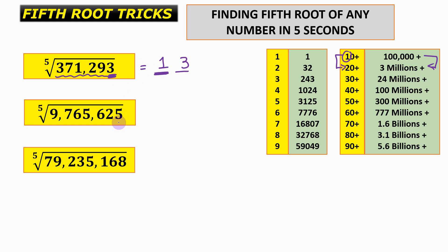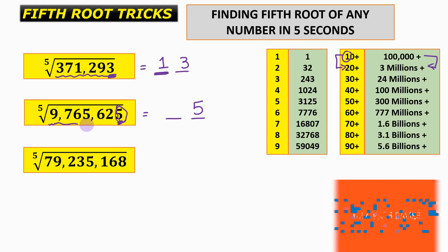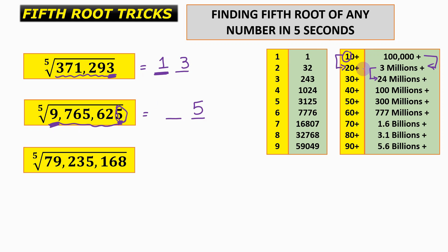Next question. Step 1: observe the unit place — it is 5, so we write 5. This number is approximately 9 million, which lies between 3 million and 24 million, so the number lies between 20 and 30. Picking the smaller number, the tens digit is 2, giving us a fifth root of 25.